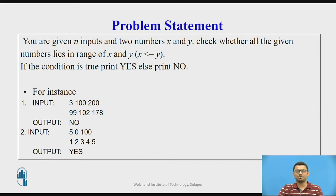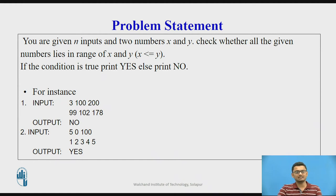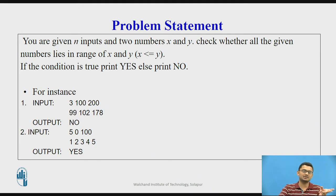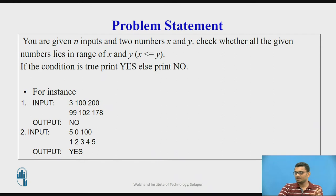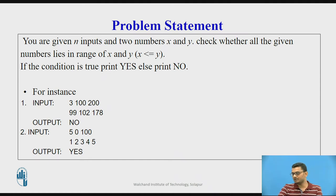So what exactly is the problem we are going to solve? You are given N inputs and two numbers X and Y. Our job is to check whether all the given numbers lie in the range of X and Y, where X is less than or equal to Y. We are given a set of numbers and two boundary cases: X as the lower boundary and Y as the upper boundary. If all numbers fall in this range we print yes; otherwise we print no.